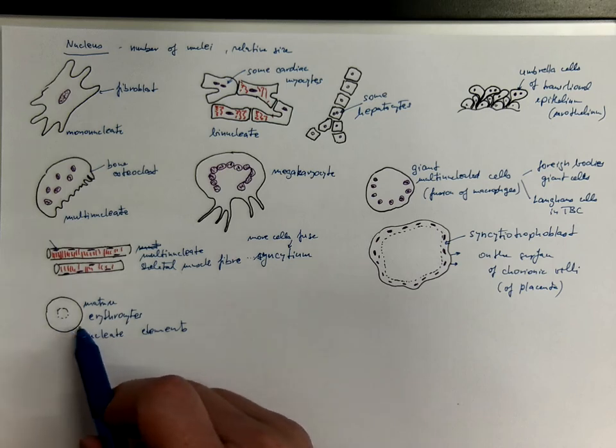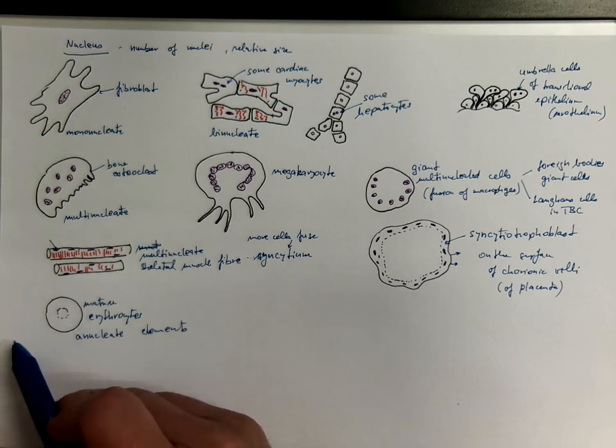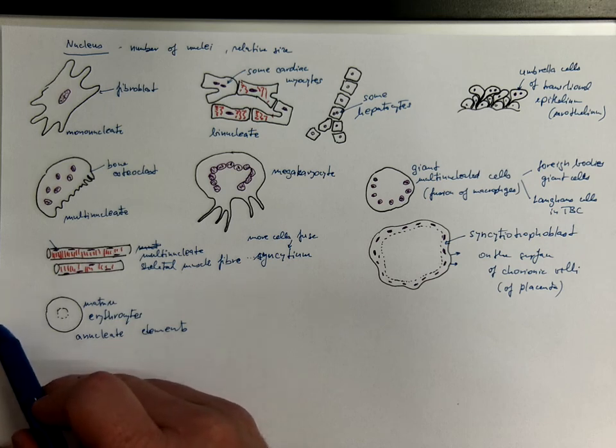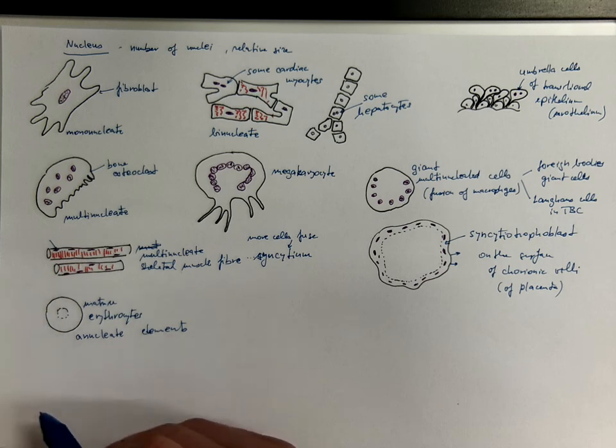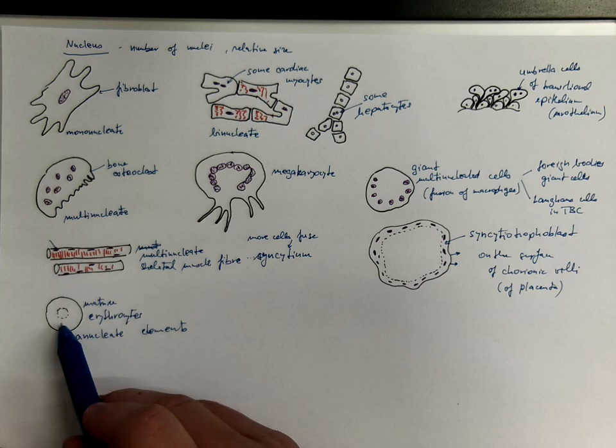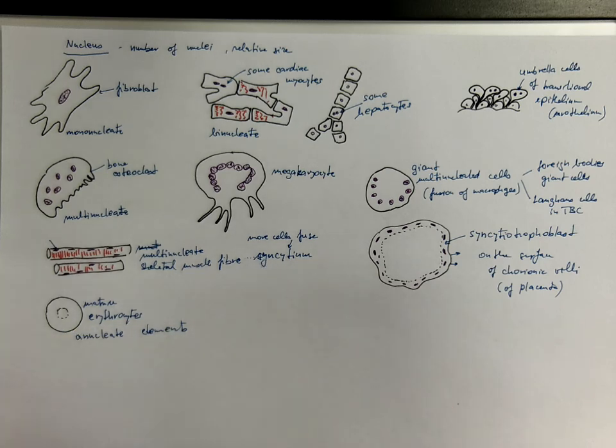Because the precursors of erythrocytes, that are called erythroblasts, they have lost their nucleus, they have extruded it, they got rid of it. So, a mature red blood cell has no nucleus.